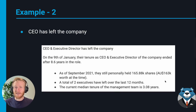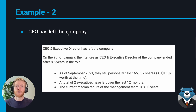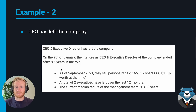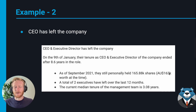Here's an example where the CEO has left the company. We don't see the earnings growth or TSR here because those data points weren't notable enough to comment on. The CEO and executive director — same person — left on the 9th of January, with their tenure ending after 8.6 years in the role. That's quite a while, so I'd want to see how the company performed during that period. As of September 2021, they personally held 165,000 shares worth about 163,000 dollars — not much compared to the general counsel's 10 million.